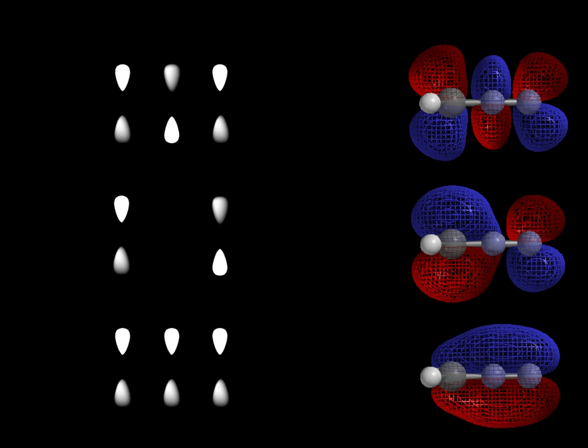In chemistry, a conjugated system is a system of connected p orbitals with delocalized electrons in a molecule, which in general lowers the overall energy of the molecule and increases stability.